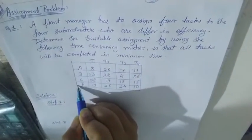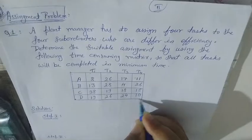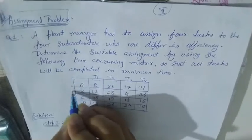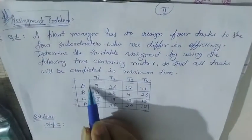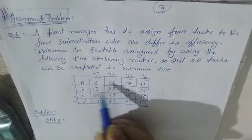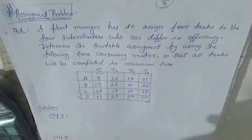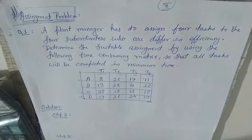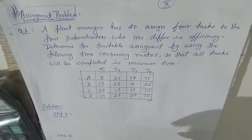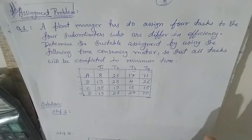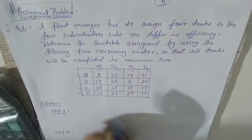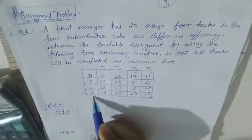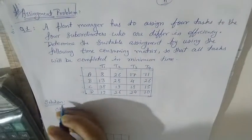Here I have a question given in a tabular form. You have four tasks and four persons, and you have to assign the tasks to the persons. The cells denote how much time or cost is involved. Our main goal is to minimize the time or cost, or maximize the profit. Now let's come to the solution.